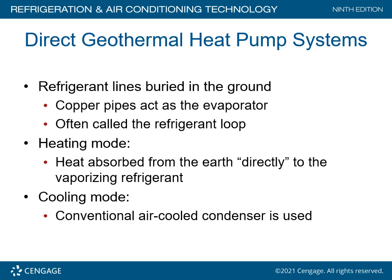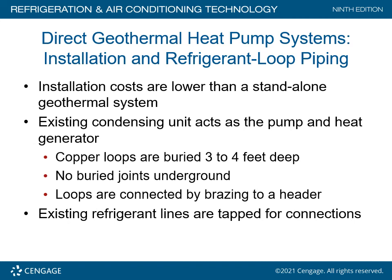In direct geothermal heat pump systems, refrigerant lines are buried in the ground. Copper pipes act as the evaporator — often called a refrigerant loop. In heating mode, heat is absorbed from the earth directly into the vaporizing refrigerant. In cooling mode, a conventional air-cooled condenser is used. Installation costs are lower than stand-alone geothermal systems. Copper loops are buried about three to four feet below ground with no buried joints underground. Loops are connected by bracing to a header, and existing refrigerant lines use tap board connections. The loop is solid copper in and out.